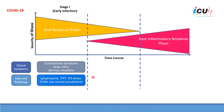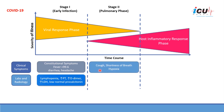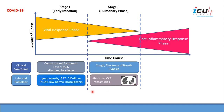If the patient doesn't get better, they may progress into the pulmonary phase where the patient may have cough, shortness of breath, or hypoxia. On chest x-ray, we may see evidence of pneumonia. On CT scan, we may see evidence of ground glass opacities. Elevation of liver function tests may also be seen.